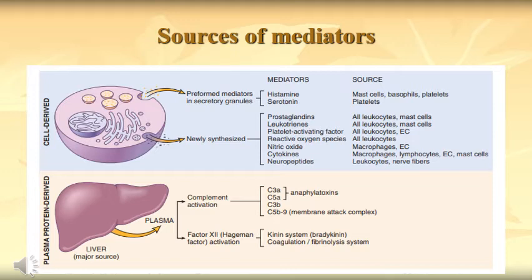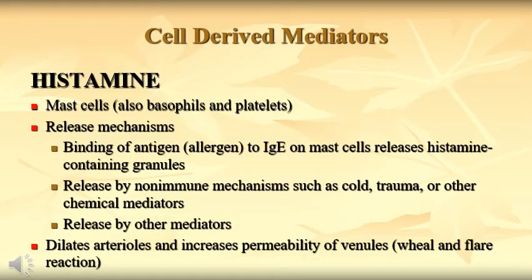Plasma protein-derived mediators come from the liver, which is our main source. There are many proteins circulating in your blood and plasma. Complement activation — with components C3a, C5a, C3b, C5b — are mainly important; C3a and C5a are the main sources of anaphylatoxins. Factor 12 also plays an important role. These are all involved in the process of inflammation. C3 is also called a cell-derived mediator in some classifications.